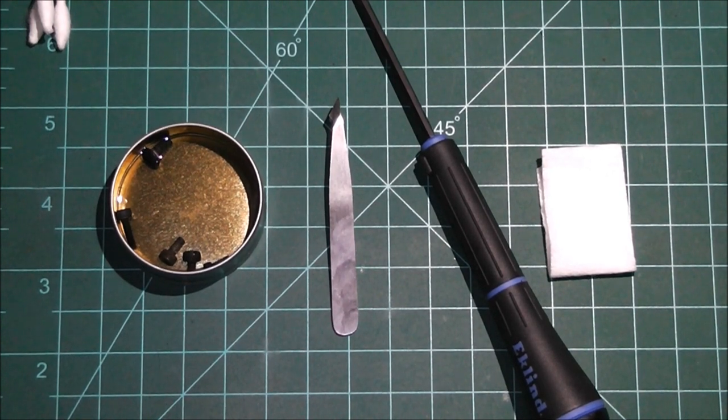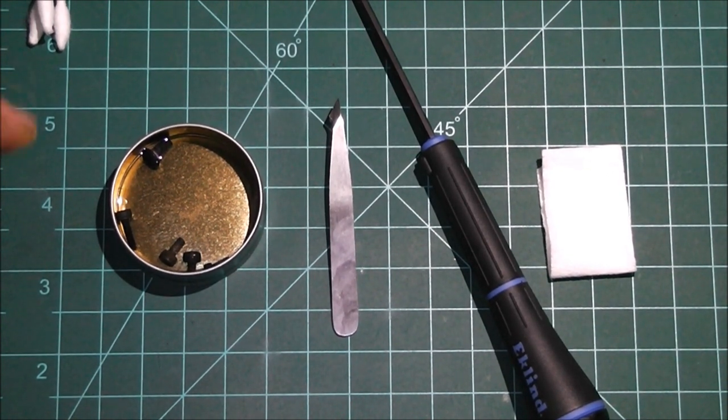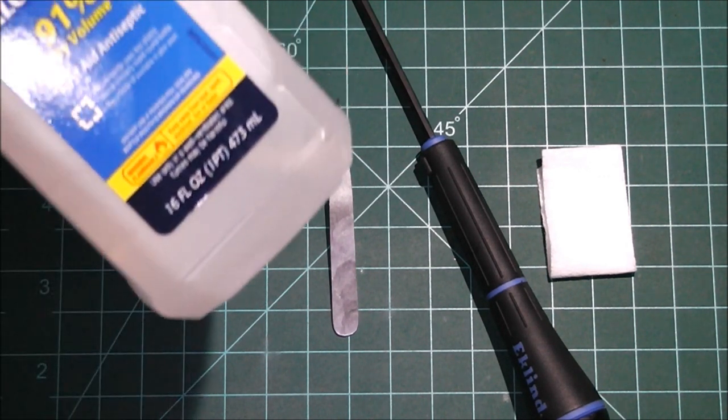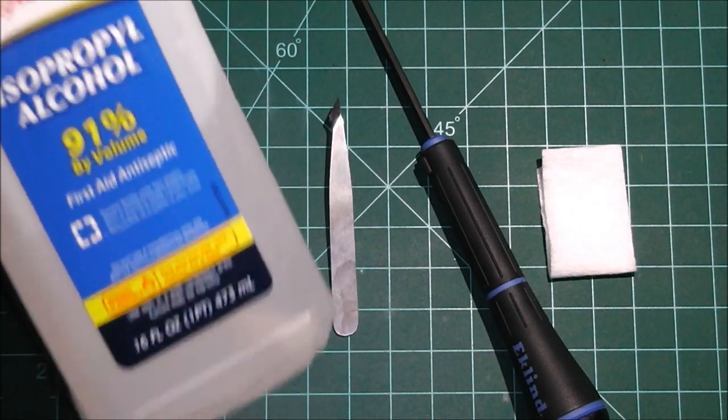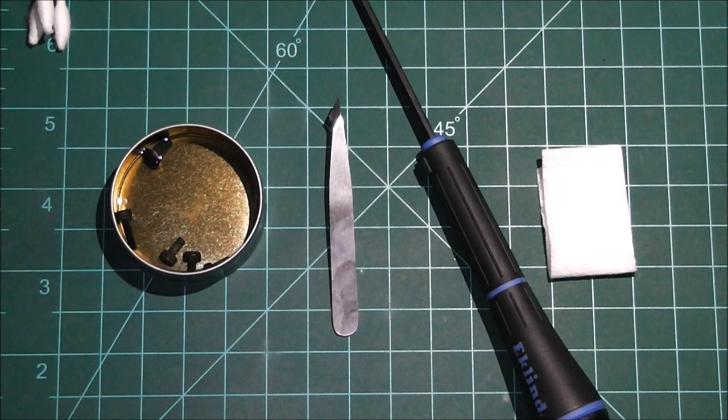Okay, let's get started here. In this first method, what you're going to do is you're going to soak your bolts, whatever you want to remove the Loctite off of, in some good, at least 91 or 95% isopropyl alcohol. You're going to want to let them sit in there a few hours, maybe even overnight.